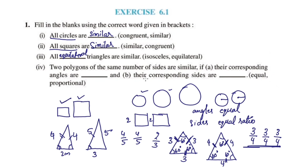Two polygons of the same number of sides are similar if their corresponding angles are equal and their corresponding sides are proportional.